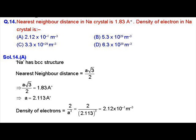The lattice constant a will be calculated as 2.113 angstroms. Now the density of electrons will be the number of atoms per unit volume.